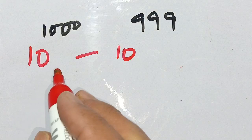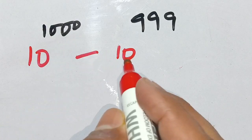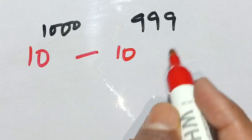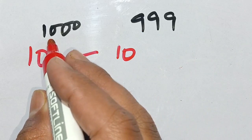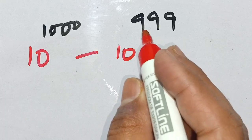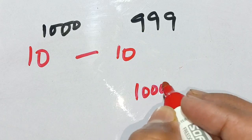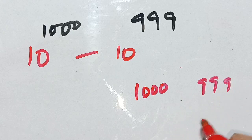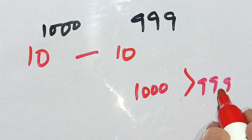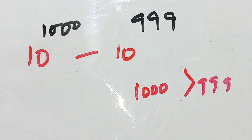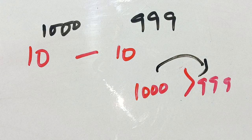Let us solve this exponential power problem: 10 raised to power 1000 minus 10 raised to power 999. Here the first power is 1000 and the second power is 999. We can see that 1000 is greater than 999, so 1000 can be written in terms of 999.